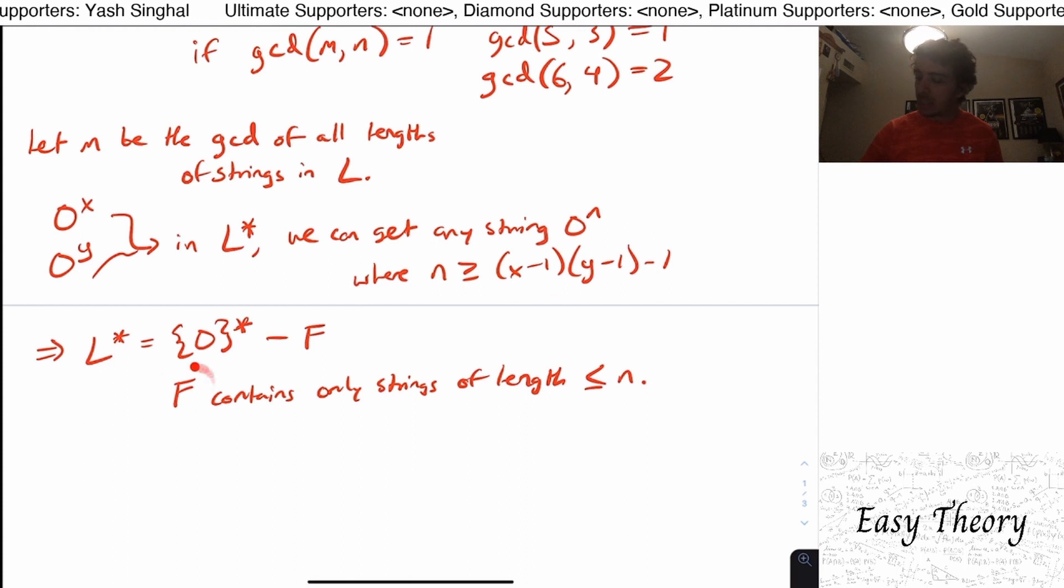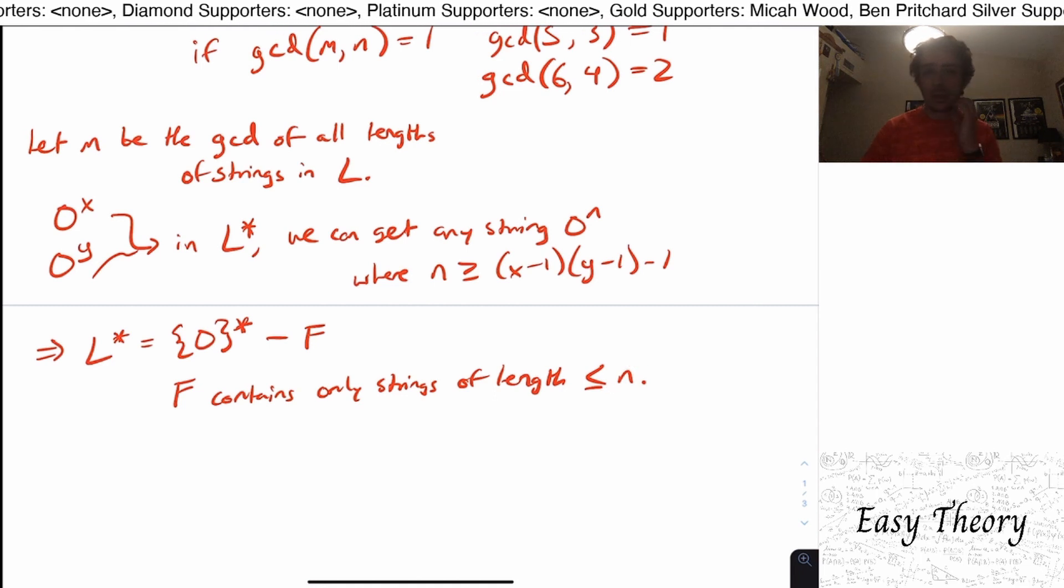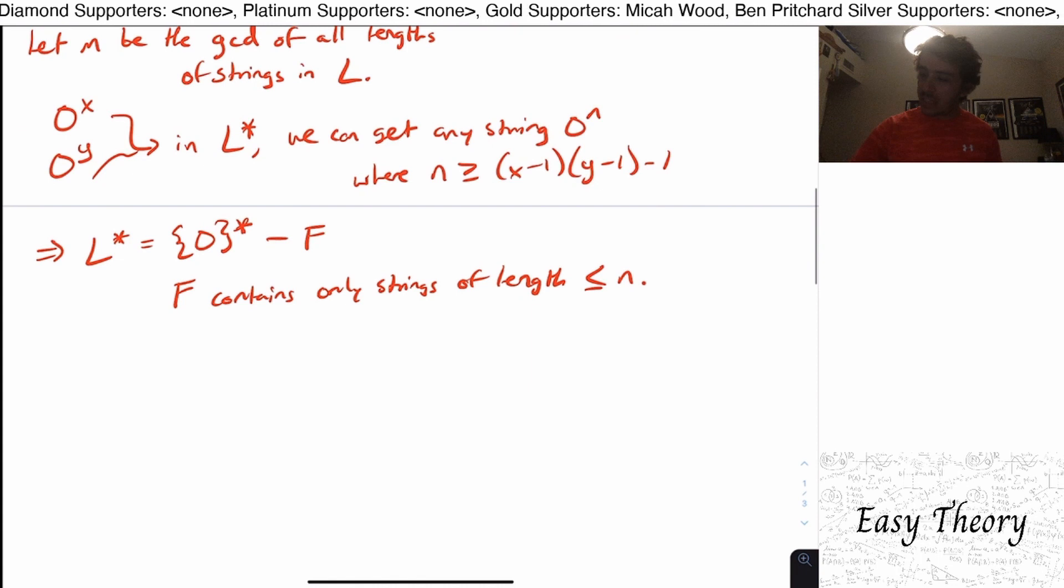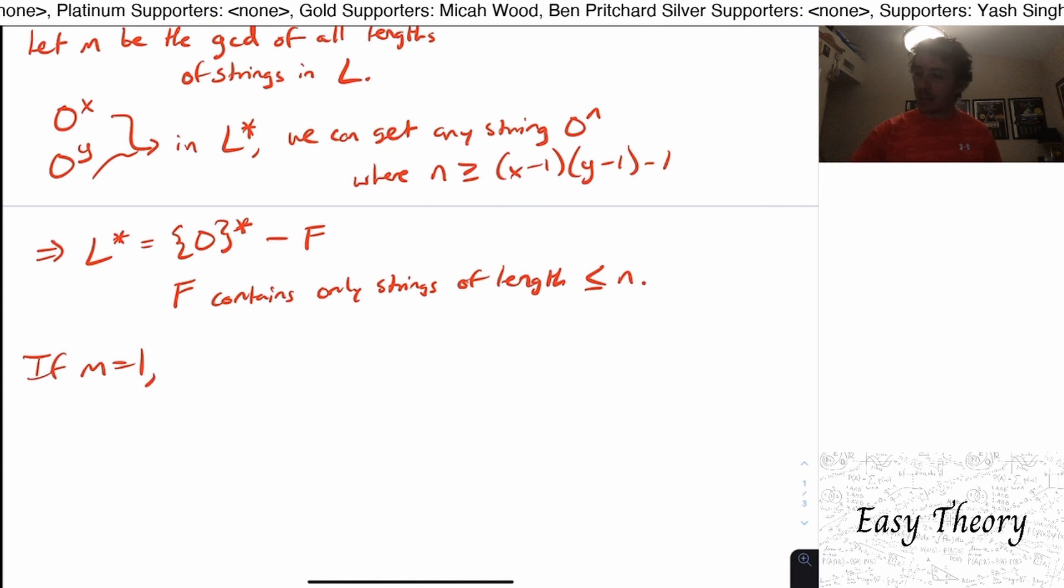So that means the language itself here of the strings that are missed is only finite because the longest length that any string could be in there is finite. So if it is the case that the GCD is one, so if M is one, then that means that there are two strings in the language that are relatively primed to each other.